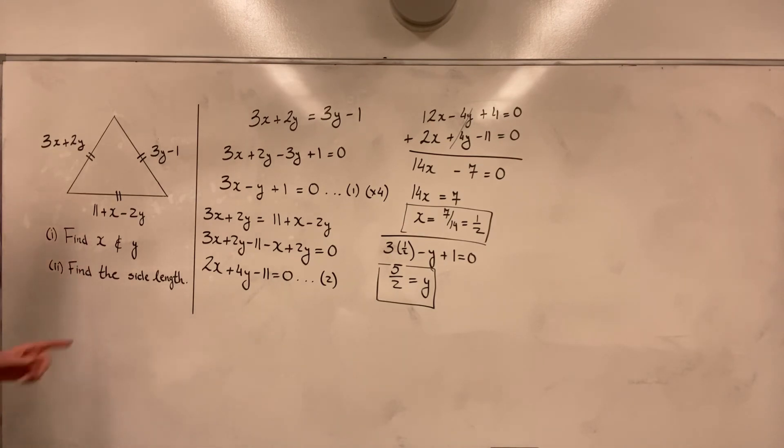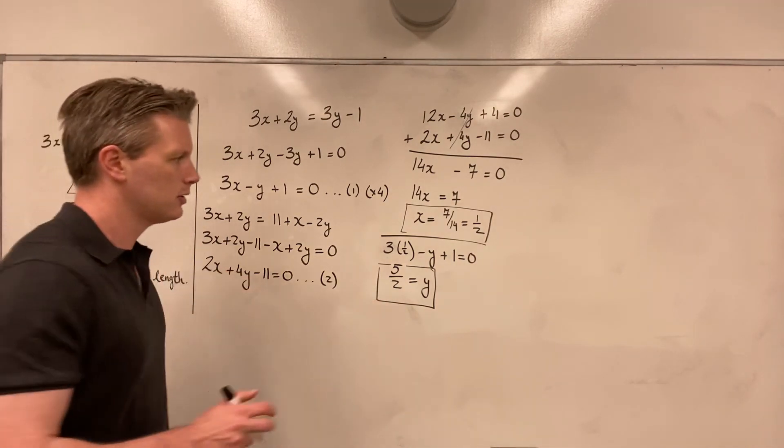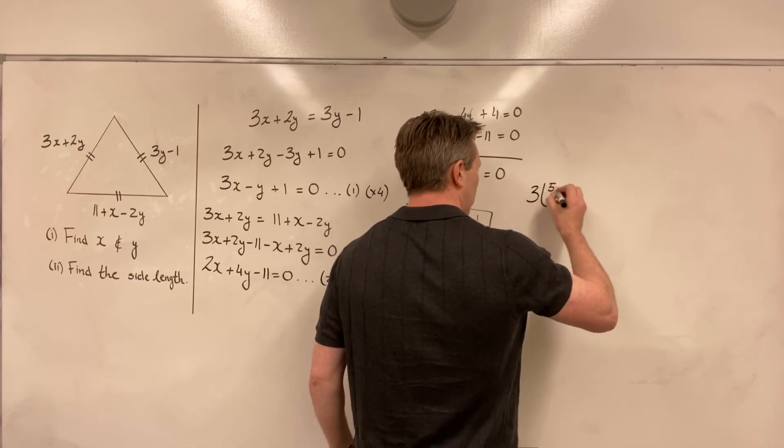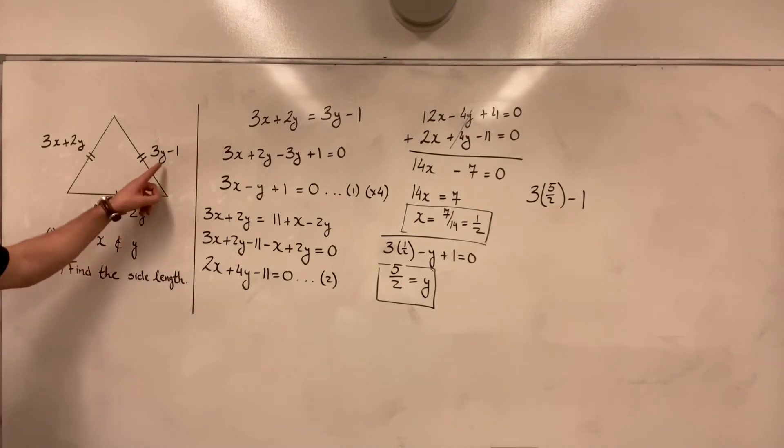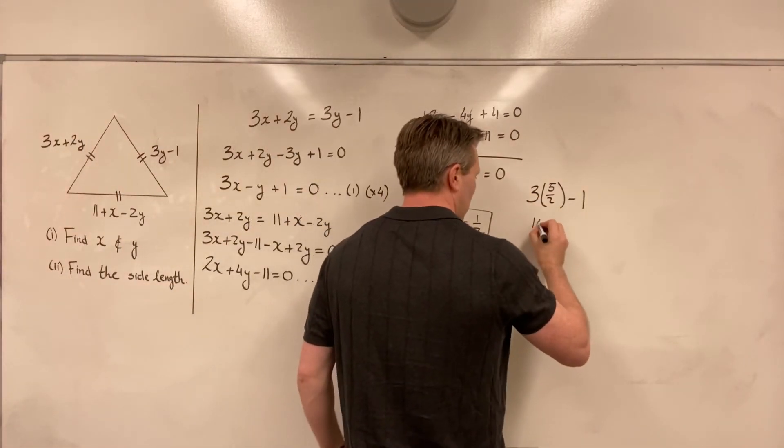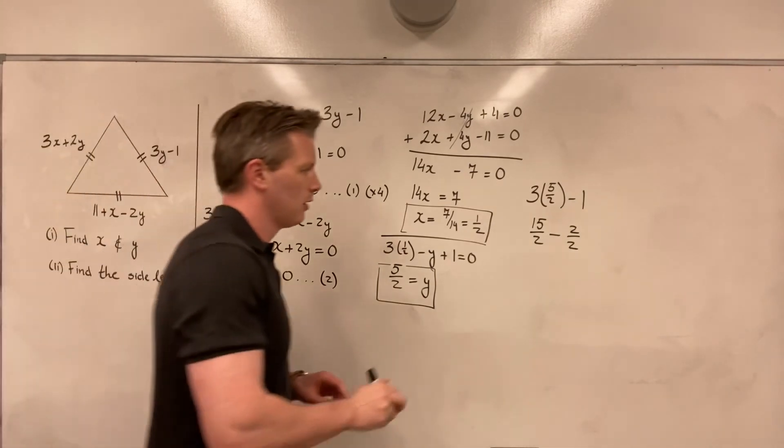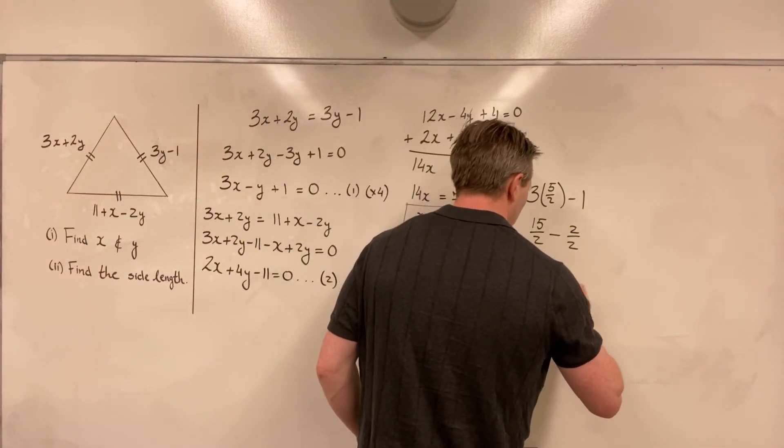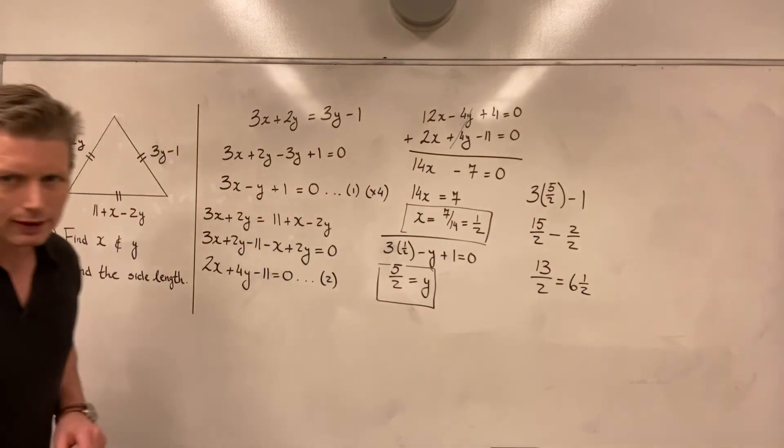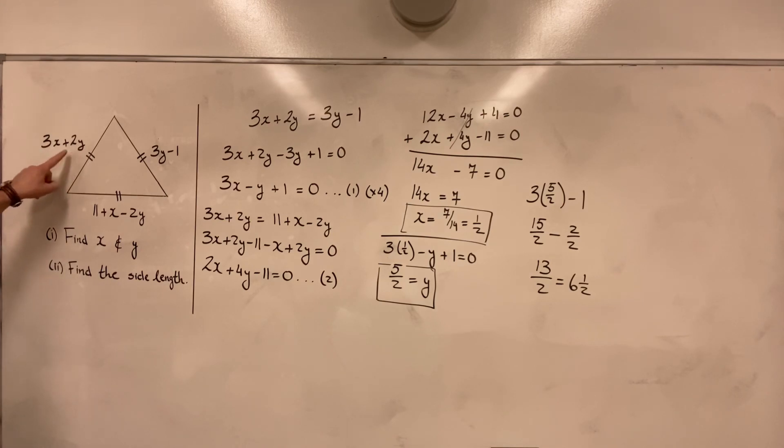To just complete the second part, find that side length, I can choose any of the sides I like. Let's just choose this one. So the side length is 3 times y minus 1. Well, y is 5 over 2. So I get 3 times 5 over 2 minus 1. This is now my side length. 3 times 5 over 2 is 15 over 2 minus 2 over 2. 1 is 2 over 2. 15 minus 2 is 13 over 2, which is 6 and a half. And that is now my side length. Also, you can put my values for x and y in here or here. I would have got the same answer. So I have solved the problem. My value of x is 1 half. My value of y is 5 over 2. And my side length is 6 and 1 half.